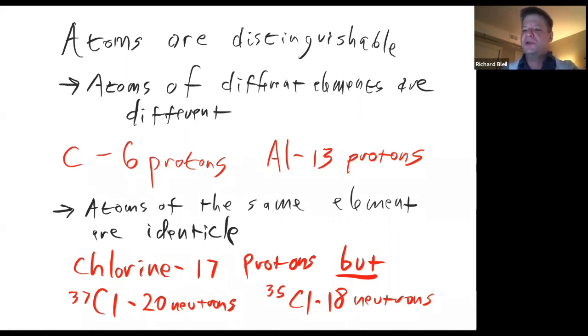Chlorine has 17 protons, but there are two major isotopes of chlorine. Chlorine-37 has 20 neutrons. Chlorine-35 has 18 neutrons. These are distinguishable, but in isotopes, the chemistry is almost completely identical. It is almost impossible to tell the difference.